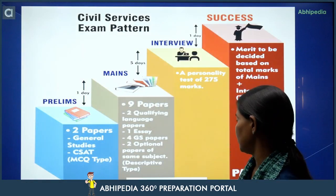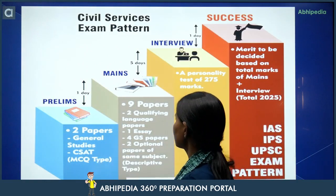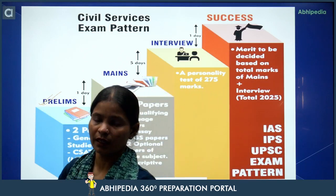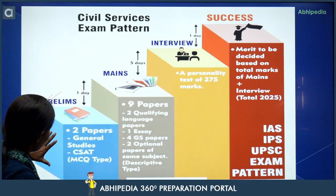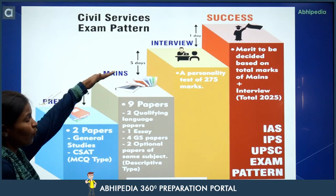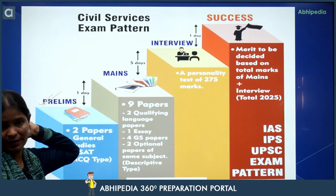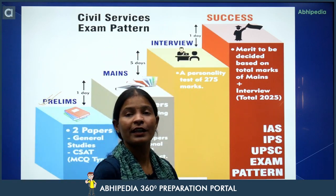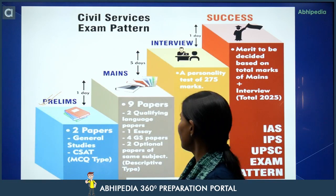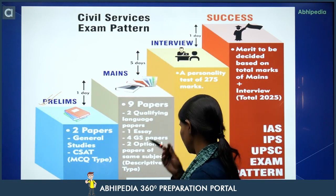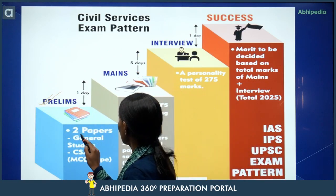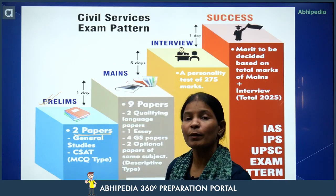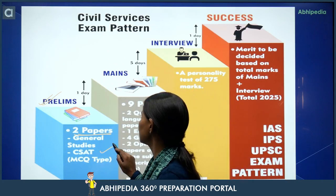Agar ham baat karte hain pattern ki, the first stage is prelims. Sabse pahle aapne prelims ke exam ko clear karne hai. And when you clear this step, then you go for the next step, that is mains. Mains ke baad interview, or interview ke baad final selection. Toh agar ham baat karte hain prelims ke exam ki, in prelims you have two papers. First is General Studies — GS paper one. And the second is CSAT. And both the papers are of MCQ nature.